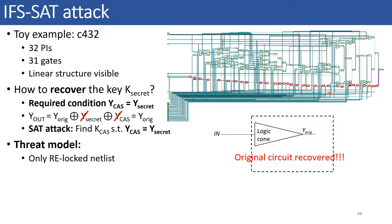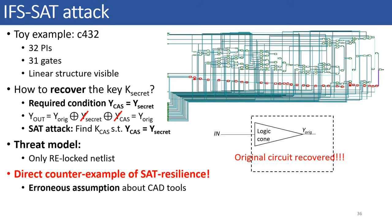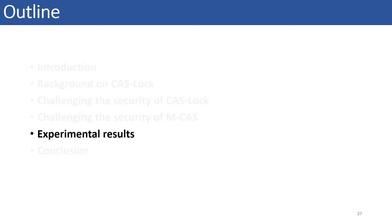Setting correct KCAS will make YCAS equal to Ysecret and the original circuit will be successfully recovered. A note here that although we are invoking a SAT attack, we are not using an oracle. Instead, we are using the Ysecret block with the correct key already hardcoded as the oracle for the YCAS block with key inputs accessible as primary inputs. SAT attack tool will return the KCAS key which is nothing but the case secret key. Hence, we only require a reverse engineered lock netlist to launch our IFS SAT attack. Thus, the proposed attack is successful and highlights the erroneous assumptions about the CAD tools and the dissolution of the structure.